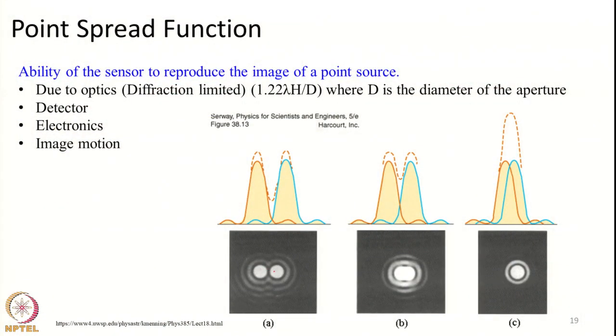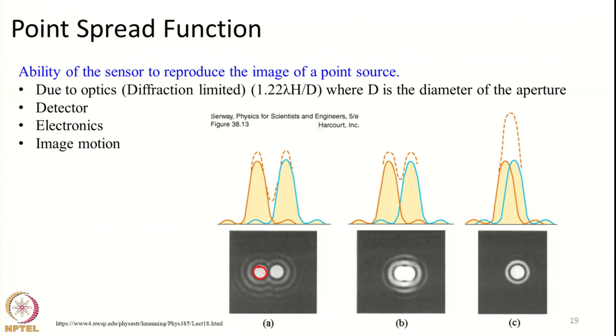In reality, a point source will not be imaged as a point — it will not happen. Almost all optical systems, whether lens-based or otherwise, have limitations in imaging a point source. A point source will be imaged as a set of concentric circles, as shown in this slide. You can see two point sources — rather than being imaged as two separate points, they appear as two sets of concentric circles with a bright central spot, then a dark ring, then a brighter ring, and so on. This is the limitation of any optical system.